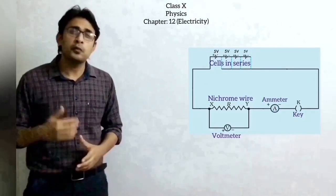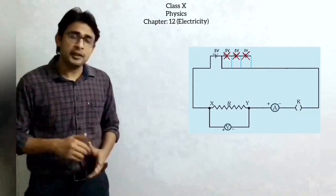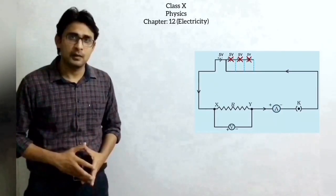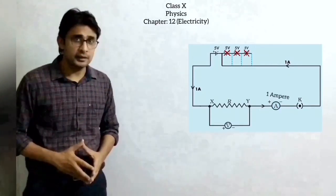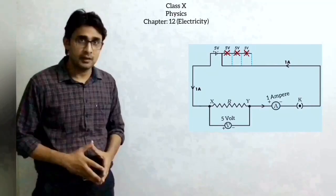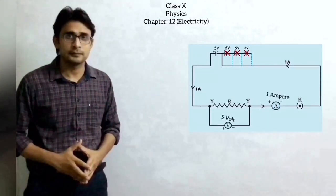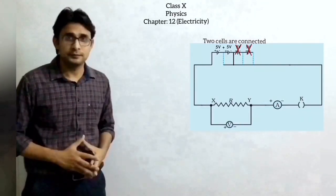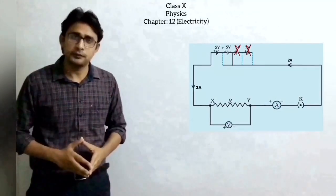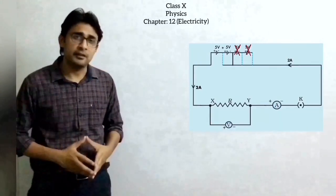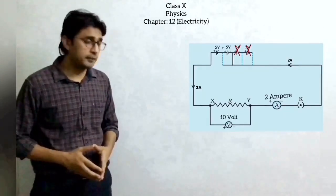We will do four trials. In the first trial we connect only one cell. After connecting one cell we switch on the key, and current flows through the circuit. The ammeter determines the current and the voltmeter determines the potential difference — the current is one ampere and potential difference is five volts. Now connecting two cells, the total potential difference is ten volts. The ammeter shows two amperes and the voltmeter shows ten volts.